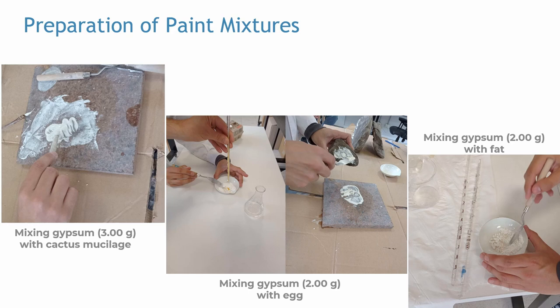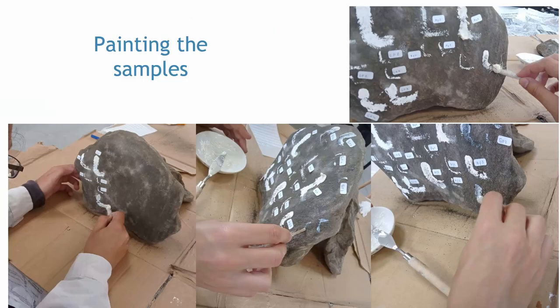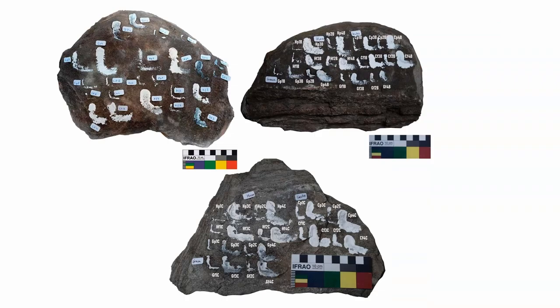In all cases, the liquid binders were mixed with a fixed amount of gypsum so as to get the paints. For each paint, 2 degrees of viscosity — high and low — were considered. The paint mixtures were then applied on the rock surface, employing the same technical gesture each time. As you can see on the slide, strokes were made from top to bottom, in a large L shape. The rock was placed in a particular position during this process.